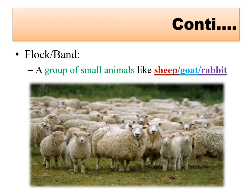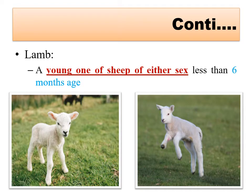A group of small animals like sheep, goat, and rabbit is called a flock. So groups of cattle and buffalo are called a herd, while groups of small animals such as rabbit, sheep, goat, or poultry are called a flock or band.